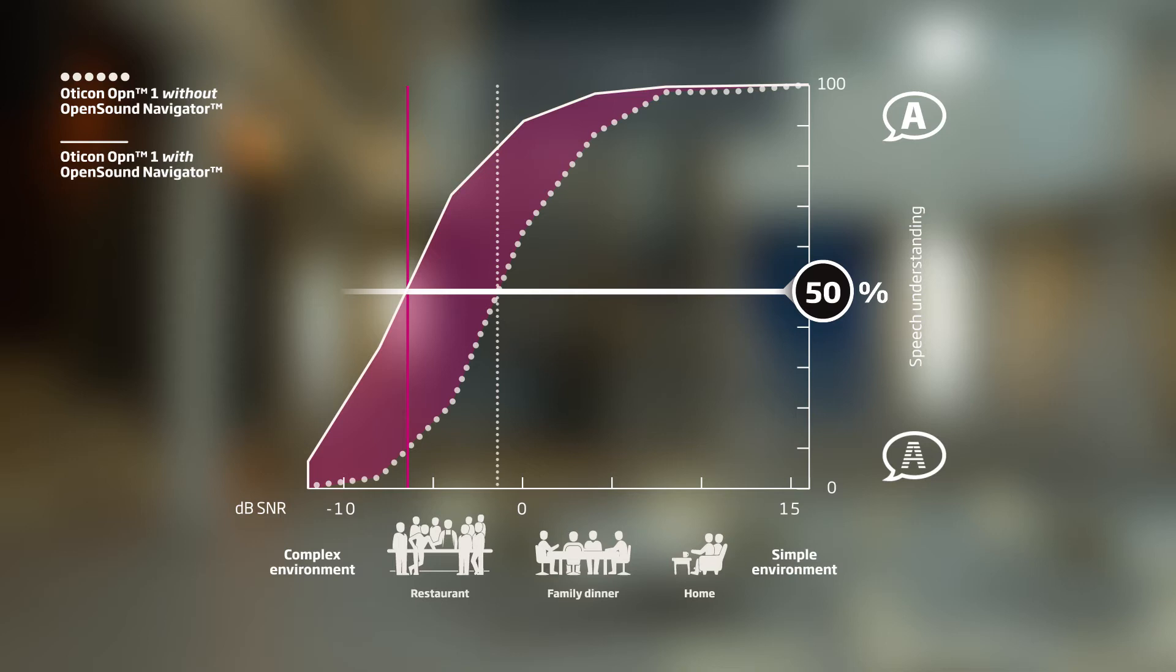Especially notice the data point at minus 4 dB SNR. A situation like this can be compared to a noisy restaurant. Here, speech understanding moved from 20 to 75%. This is the difference between isolation and participation.